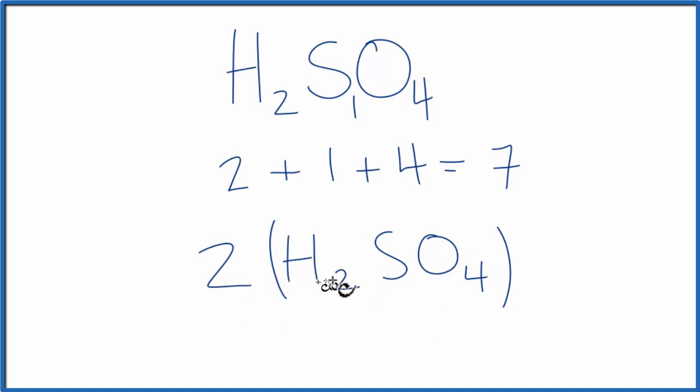So now, if we wanted to count the atoms up, we'd say two times two, that's four, plus two times the one sulfur, that's two, plus two times four is eight. So four plus two is six, plus eight, that's fourteen.